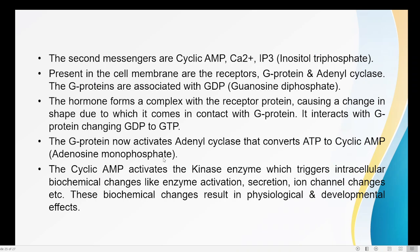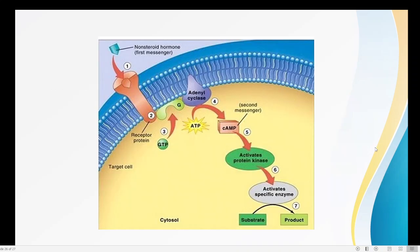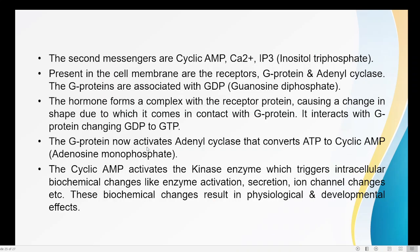The activated G protein now activates adenyl cyclase, which converts ATP to cyclic AMP. It is adenyl cyclase that helps in the formation of cyclic AMP from ATP. In order to stimulate adenyl cyclase, the G protein is needed, and for the G protein to be activated, GTP is needed. This is how this reaction proceeds in a chain-like way.